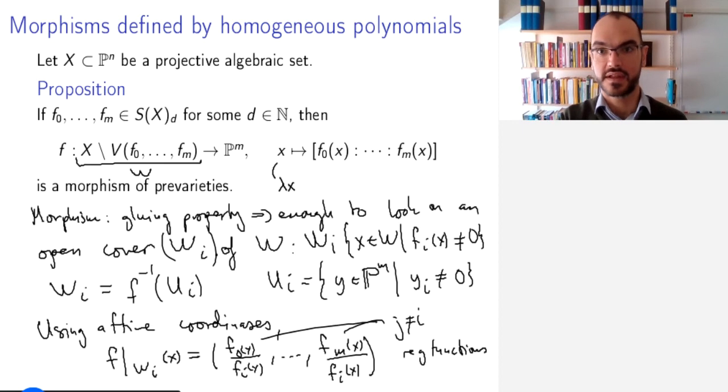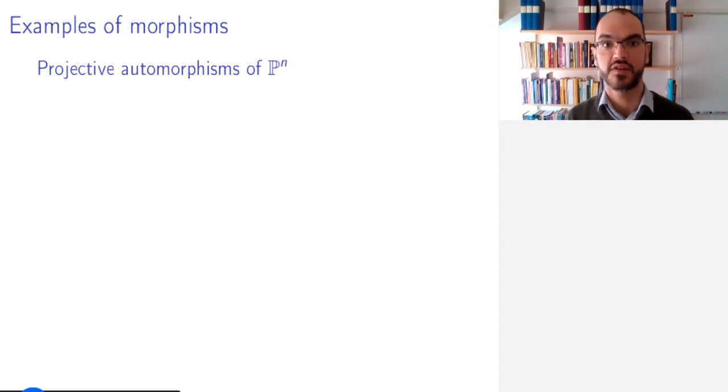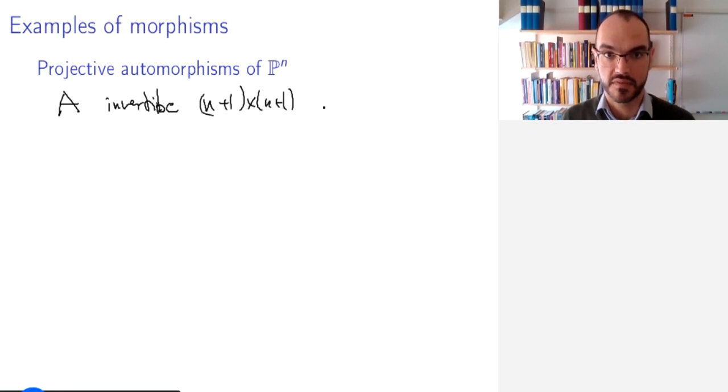Let us look at some examples of this. So let's look at projective automorphisms of ℙⁿ. So if you take a matrix A, an invertible (n+1) × (n+1) matrix, then of course you get a map from affine space